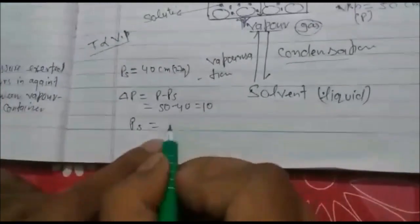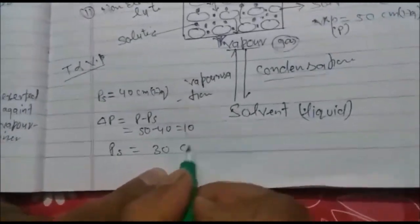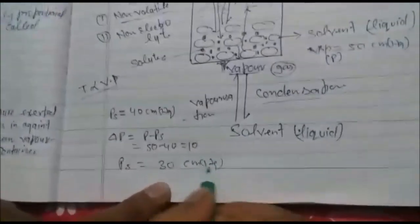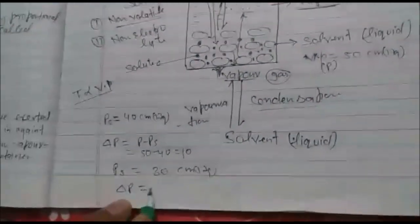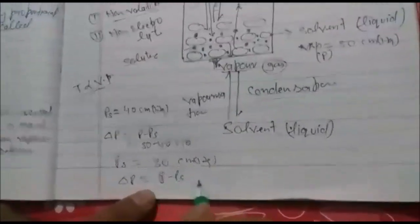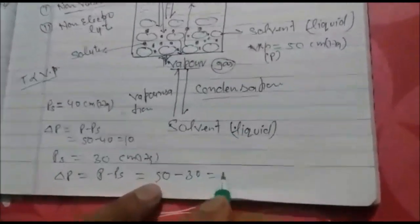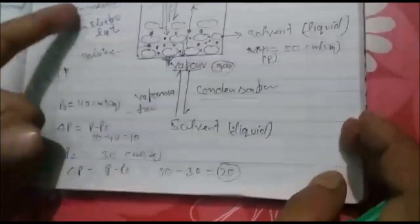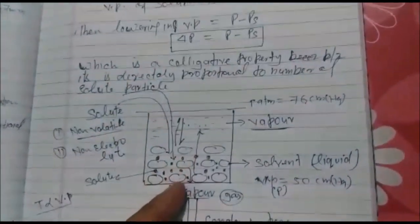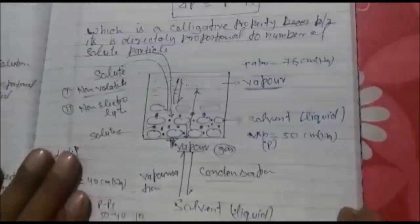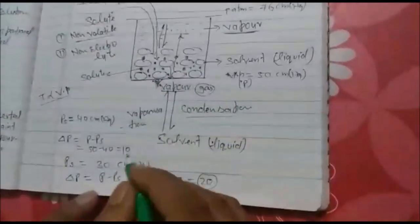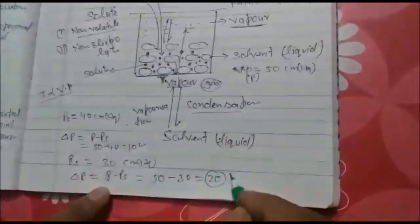Automatically vapor pressure again decreases. Let now PS is become 30 cm Hg. Then delta P, again P minus PS, the P's remain same but PS is 30, the lowering is now 20. So when you add solute into solvent, vapor pressure decreases, but lowering increases. You can see 10 then 20.